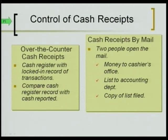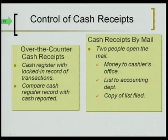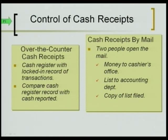Over-the-counter cash receipts: you want a cash register with a locked-in record of transactions. 'If we don't give you a receipt, your meal is free' — that's their attempt to get everything recorded. Compare the cash register record at the end of the day with the cash in the drawer — this is a reconciliation of the cash register. Bank tellers do this at the end of each shift. For cash receipts by mail — mostly checks — you want to separate responsibilities: have two people open the mail, give the money to the cashier's office and the list to the accounting department.